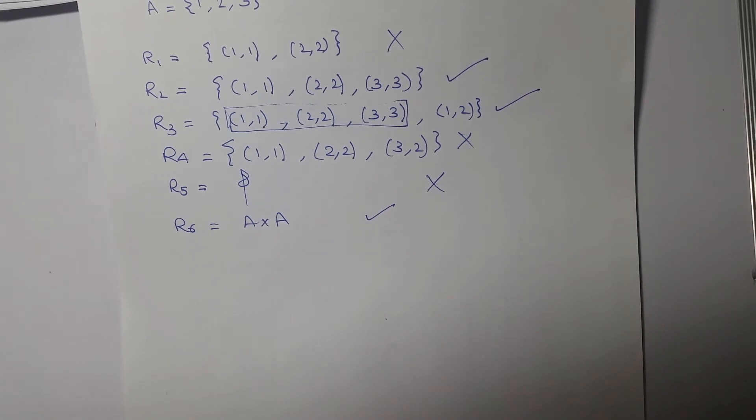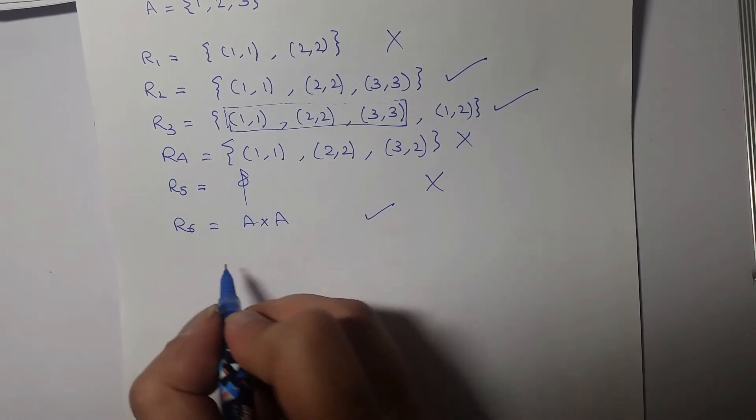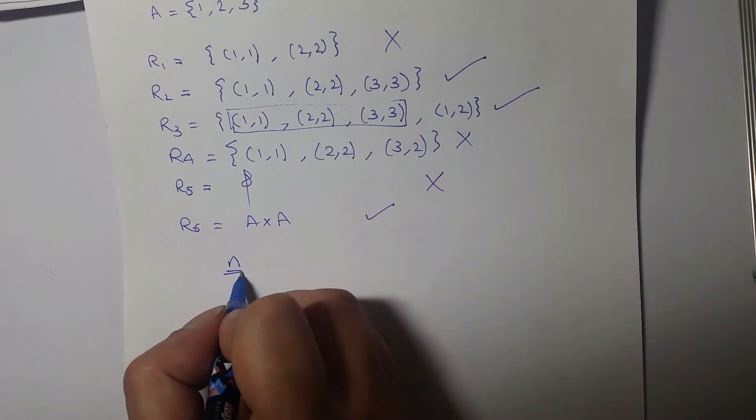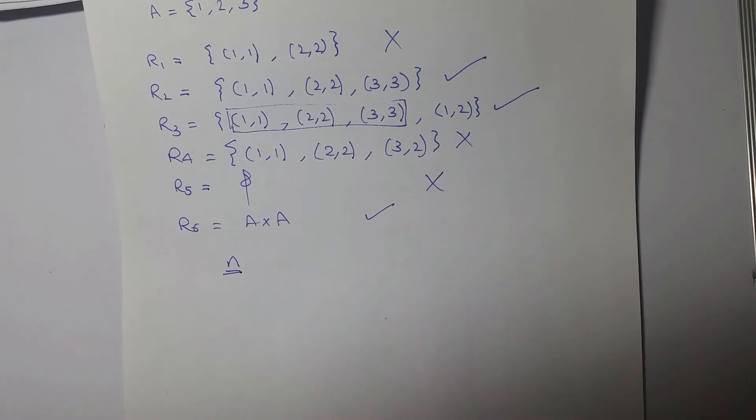So if there were n elements in a set and we were to calculate how many reflexive relations are there, how do we calculate that? We have said that every element must be related to itself.